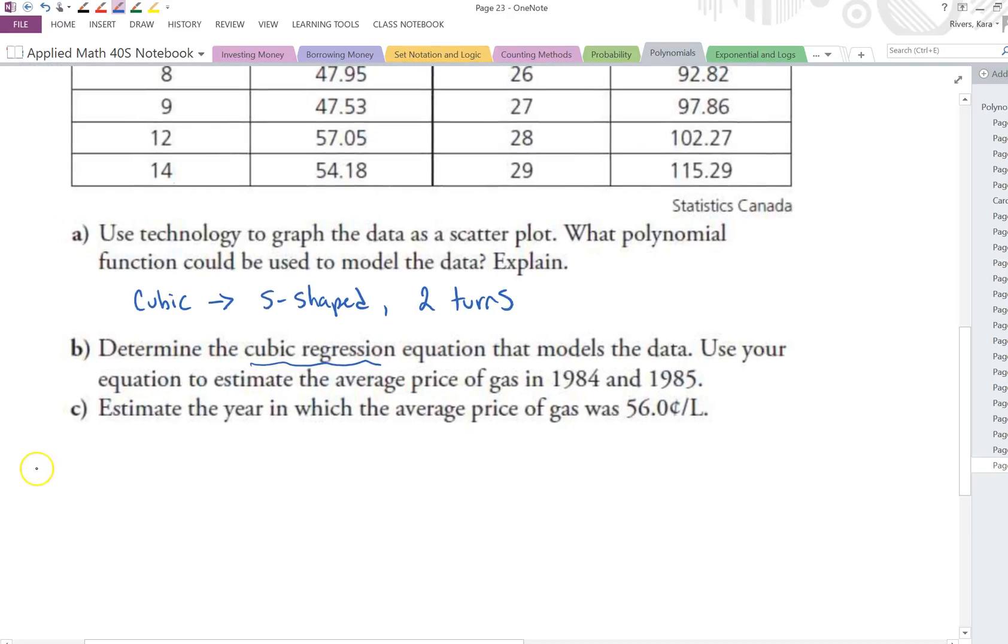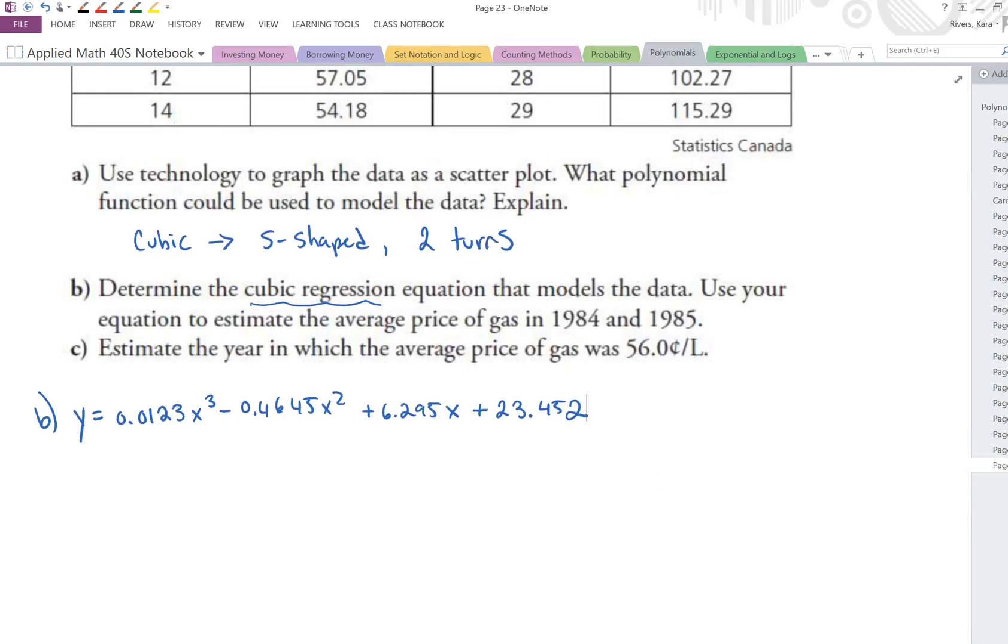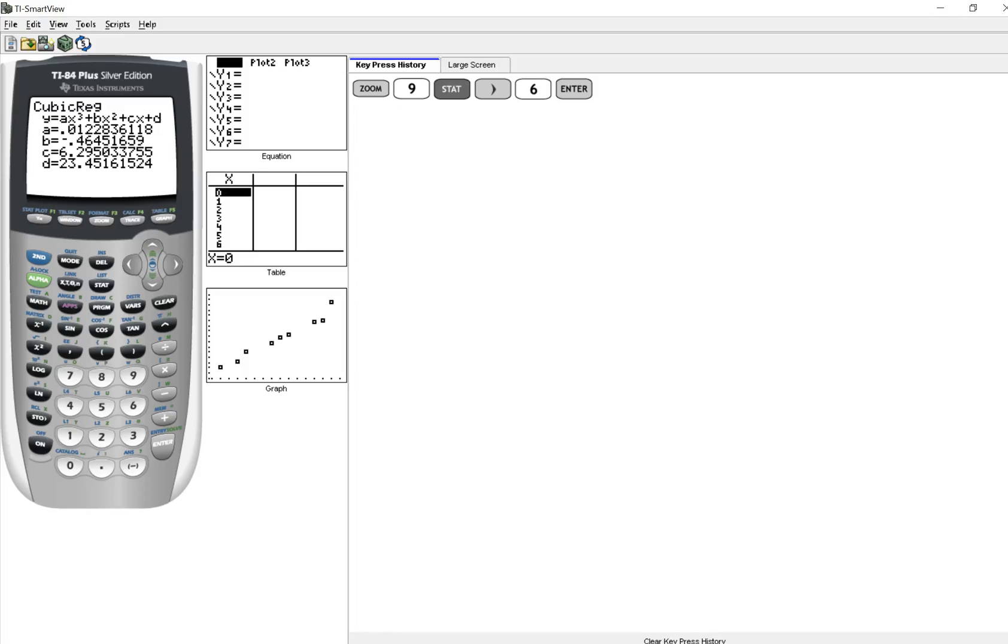So there's our equation. Let's write that down. So for B, determine the regression equation. Our equation becomes y equals 0.0123x cubed minus 0.4645x squared plus 6.295x plus 23.452. Now it says use that to estimate the average gas price in 1984 and 1985 and then estimate the year in which the average price of gas was 56 cents per liter. So let's go ahead here. Let's put in our equation VARS 5, enter and we can hit trace.